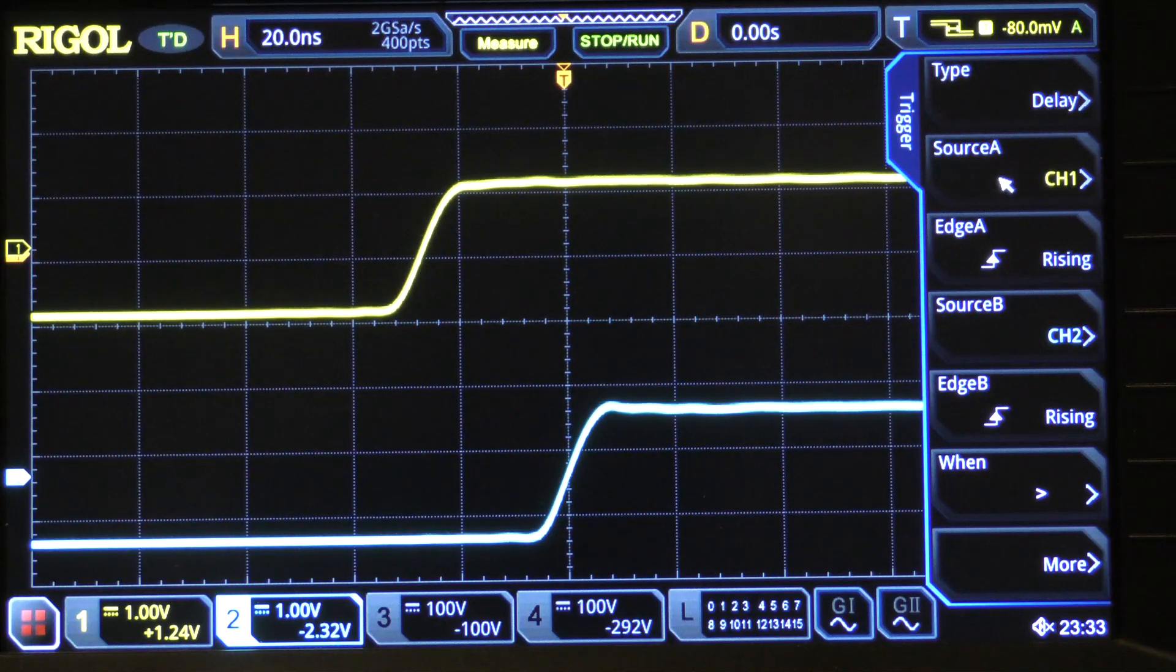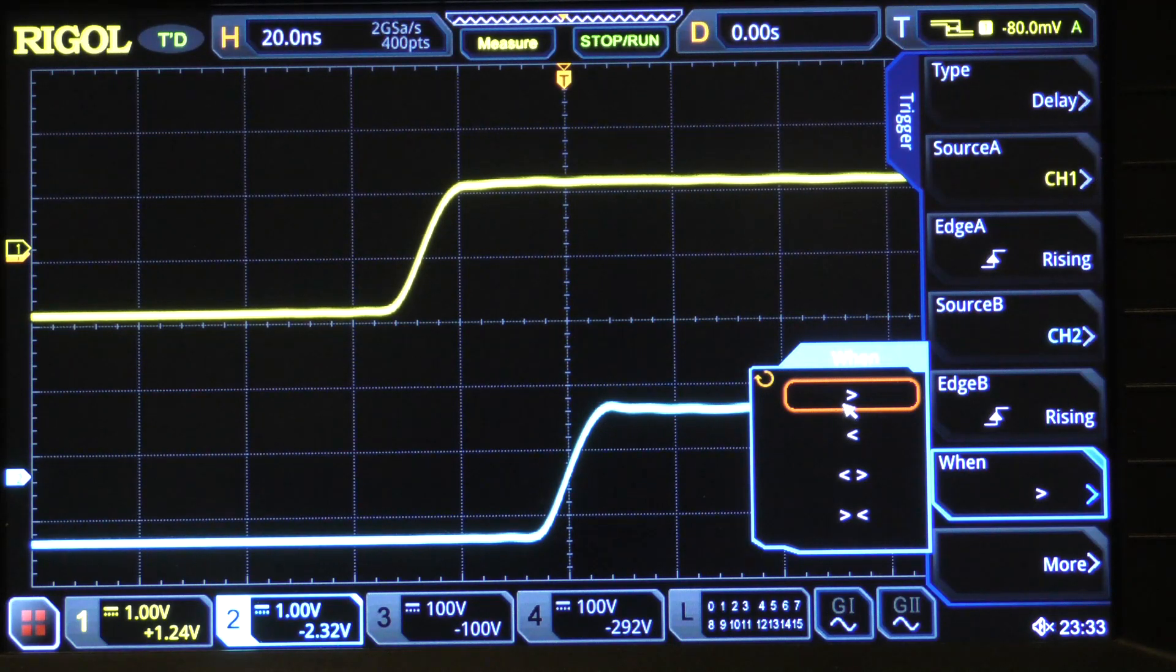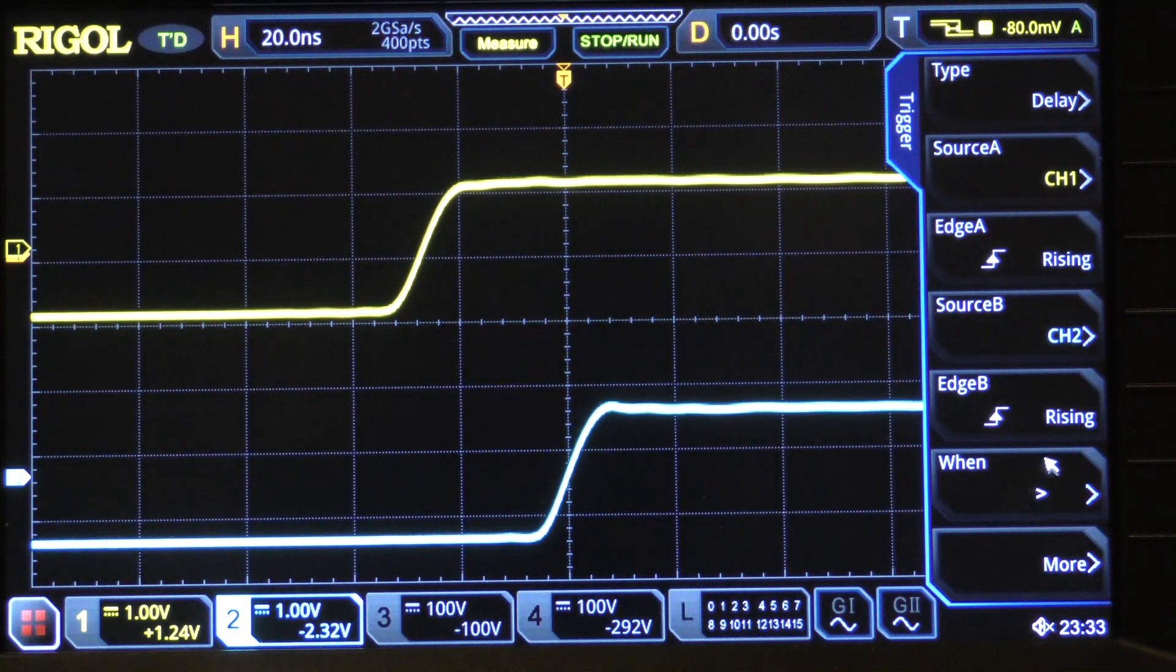Now, as I pointed out, these can be digital channels. One can be analog and the other can be digital, or they both can be digital, or both analog. Then you decide which edge are you going to be using for this delay timing. In this case, we've chosen a rising edge on source A and a rising edge on source B. Then you have to decide whether you want to look for times that are greater than, less than, outside the range or inside the range of values. Now we're going to look for a value that is greater than, so we're going to use the greater than symbol. Then we're going to click on more, and up here we're going to set a delay time.